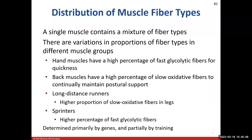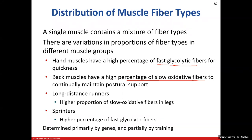A single muscle can have all three fiber types — it's not just one type per muscle. The mixture depends on the muscle group. Back muscles, which maintain postural support for long periods, have a large amount of slow oxidative fibers. Hand muscles, which perform quick fast contractions, are predominantly fast glycolytic.